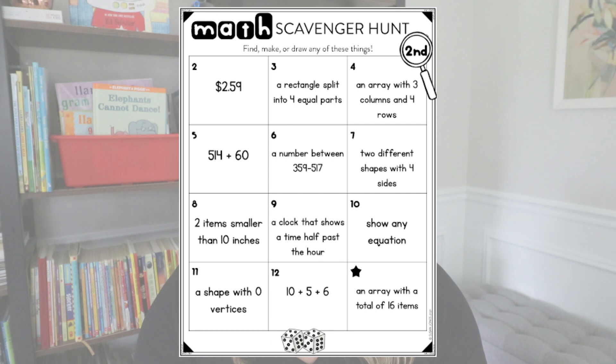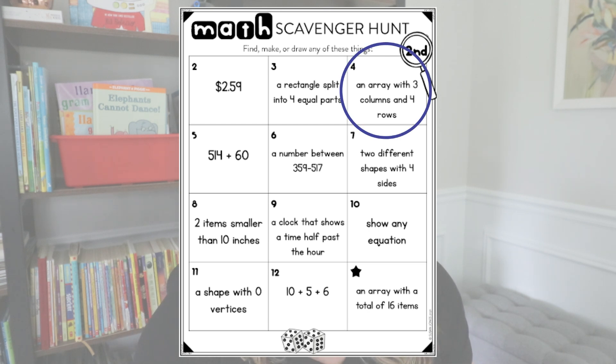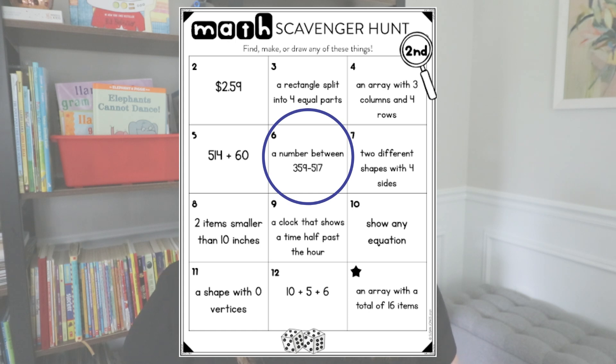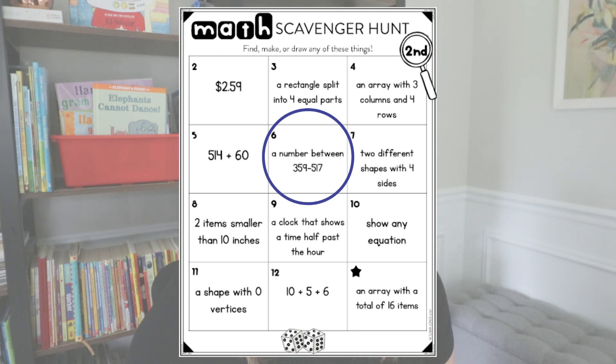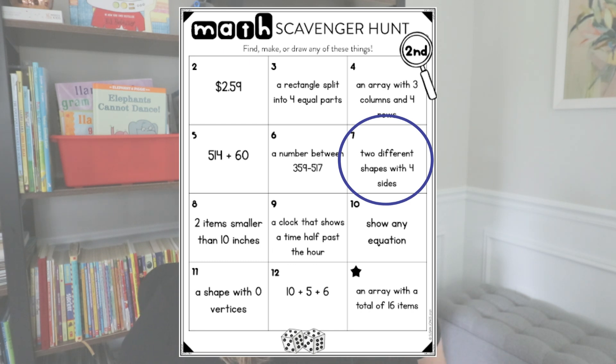Students simply roll two dice and find the sum. When they find the sum — let's pretend they get a four — they find it on their board and have to make an array with three columns and four rows, choosing to do this however they want. They might grab some cubes and make the actual array. I've always had my students do this with Seesaw, because they can take a picture of what they're making and share it — which is great because I can go back and look at every student's work. If they rolled a six, they would have to find a number between 359 and 517.